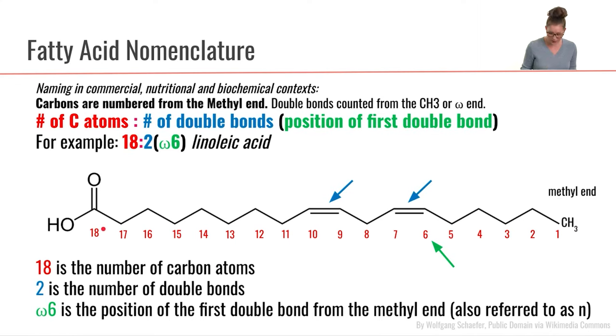We end up with 18 carbons total. We see that we have two double bonds here. And then we see that our first double bond comes at carbon number six.